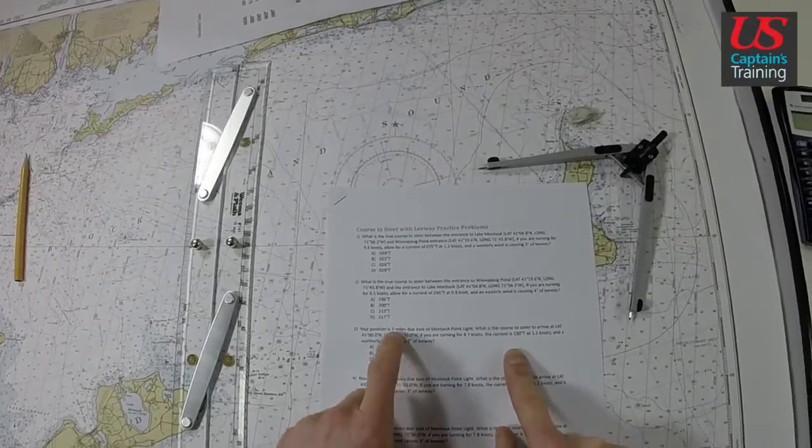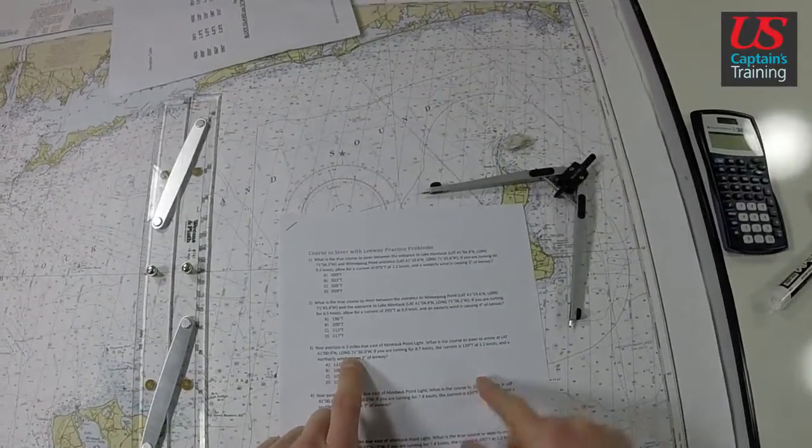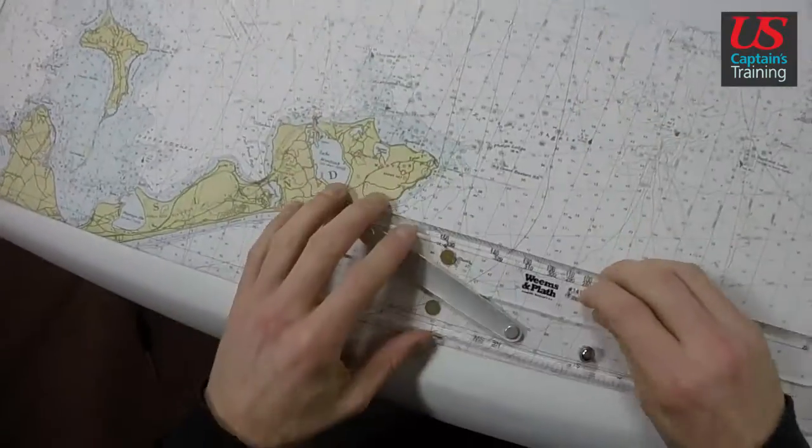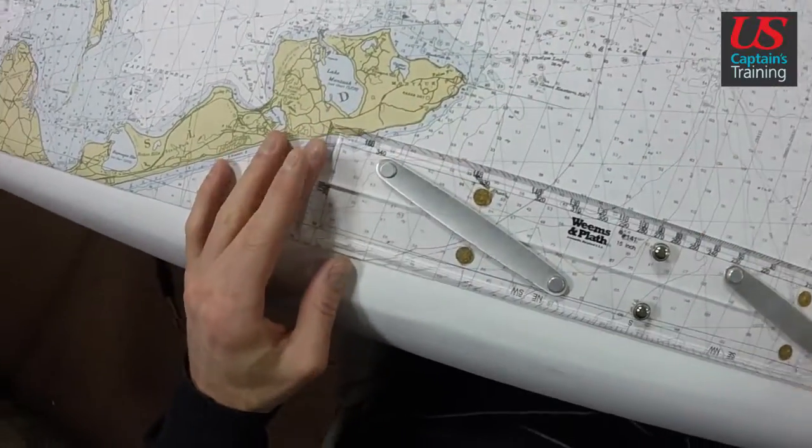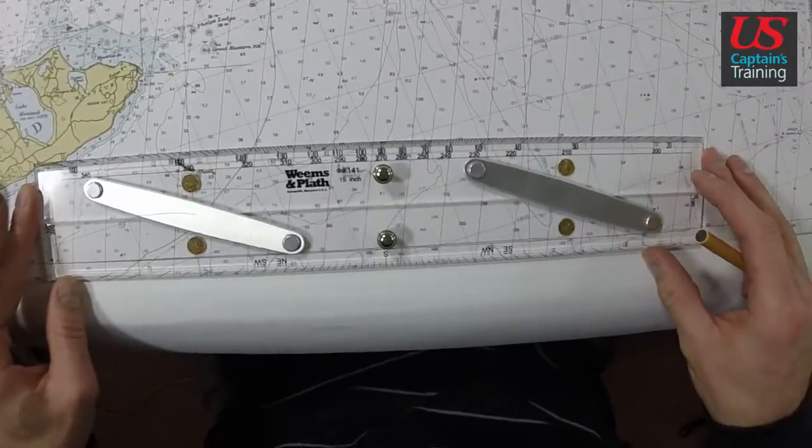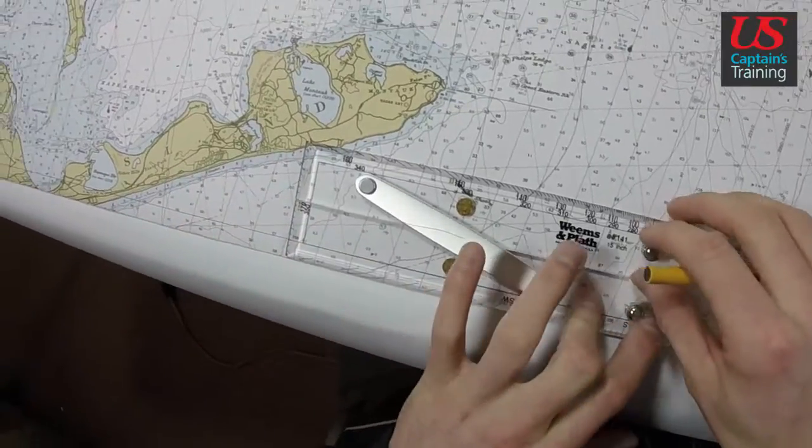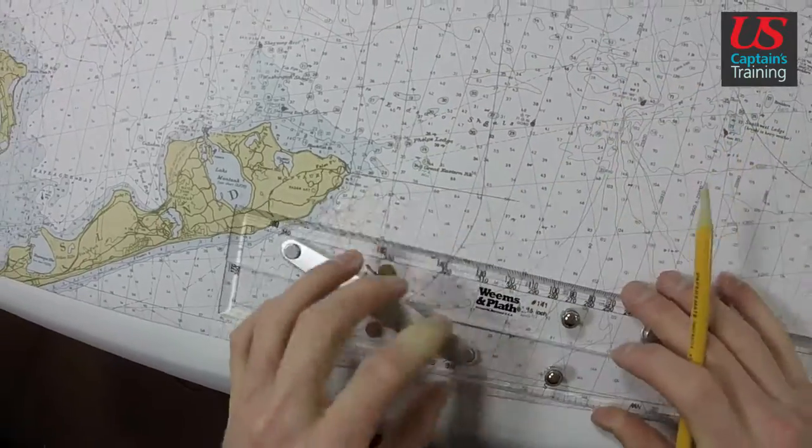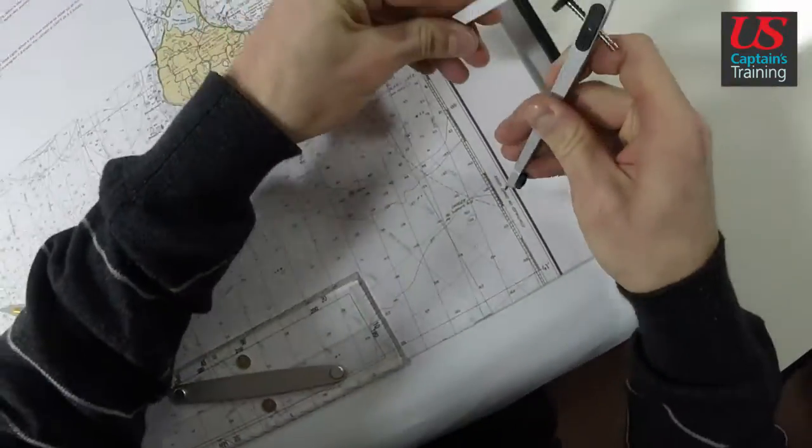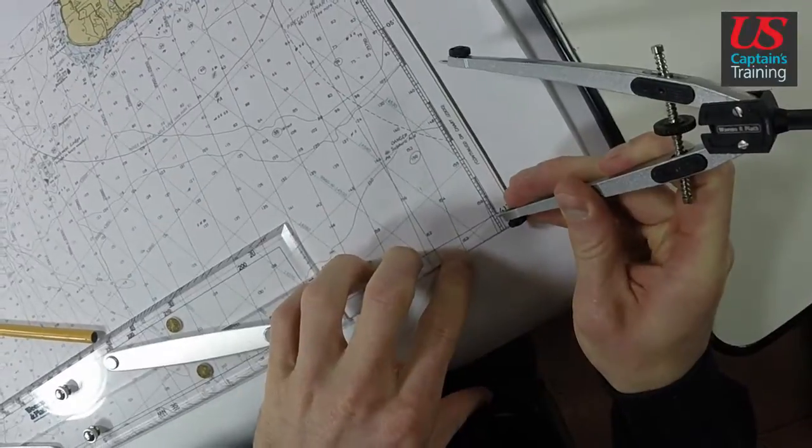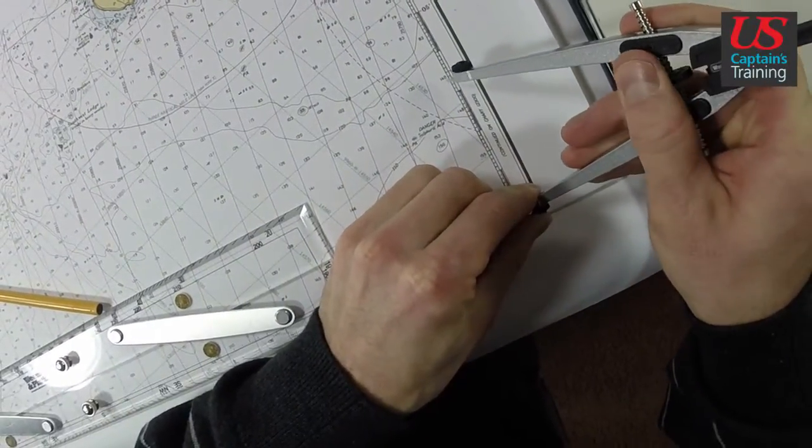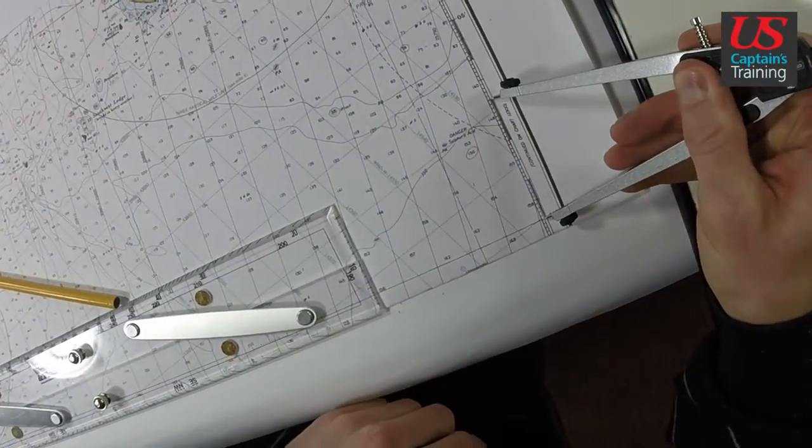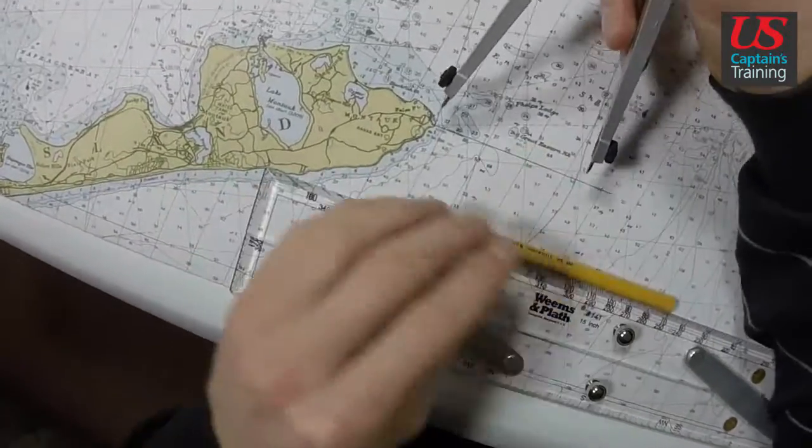We'll start by finding our starting point and ending point and connect those with a line. Three miles due east of Montauk Point Light. We'll get due east using the parallel rules, walk it up to Montauk Point, strike a line at least three nautical miles long. We'll measure three nautical miles: one, two, three nautical miles. We'll go down our line three miles.